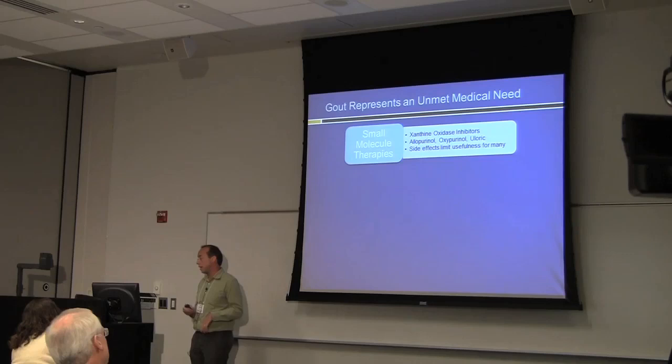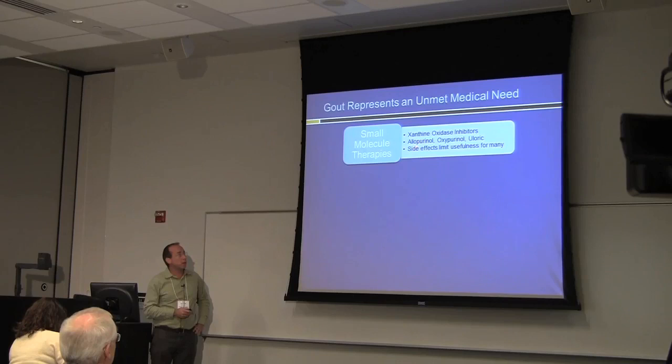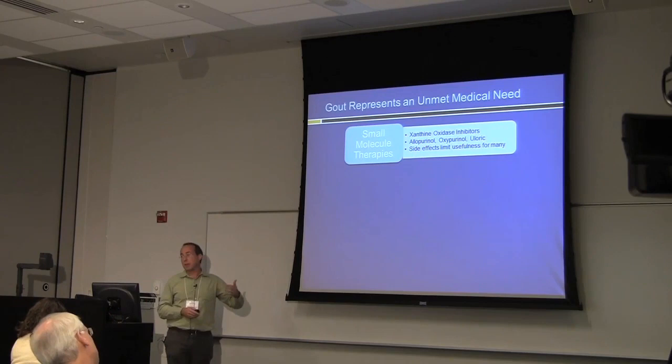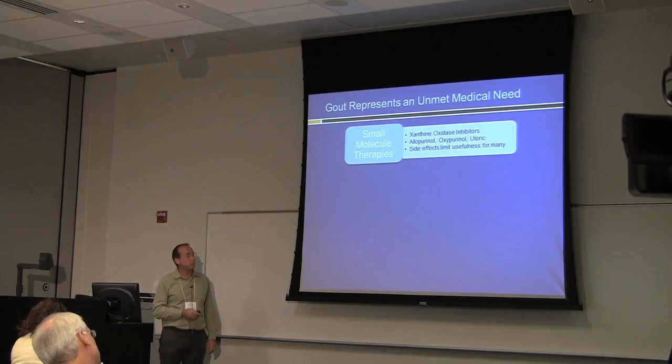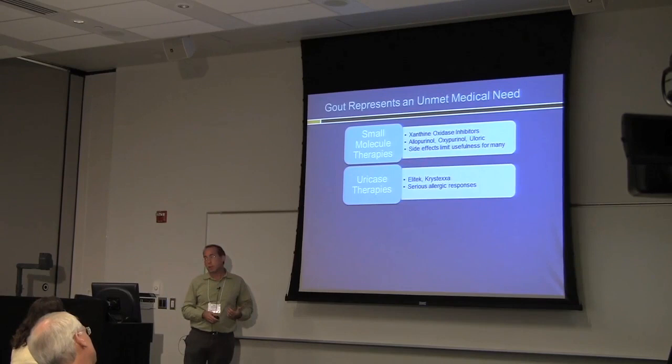Historically, small molecule therapies have been used to manage gout. The most popular is allopurinol, which inhibits xanthine oxidase — the enzyme immediately upstream of uricase that produces uric acid — so we're able to inhibit production of uric acid to deal with gout. The problem is that there are a number of side effects associated with small molecule therapies, and because of that, pharmaceutical companies have been interested in developing protein-based therapies against gout.